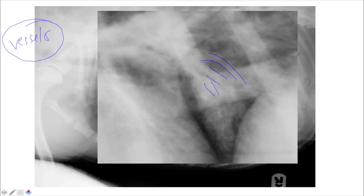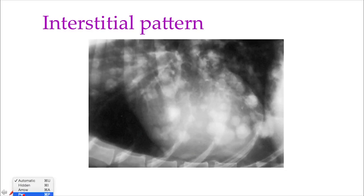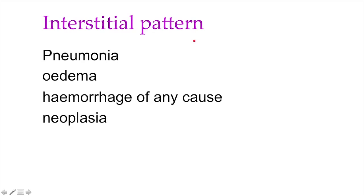When we come to interstitial pattern, nodules are an interstitial pattern — an easy way to remember. When you see pulmonary lung nodules, these are interstitial patterns. You may read descriptors like 'hazy' or 'nodular interstitial pattern' — those first words just describe the shape; they are all interstitial patterns. If you look carefully and exclude artifacts such as positioning or exposure, there are four main differential diagnoses for interstitial patterns: pneumonia, edema, hemorrhage, and neoplasia.